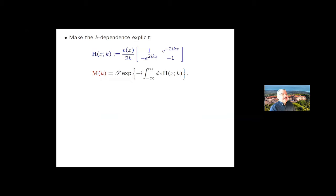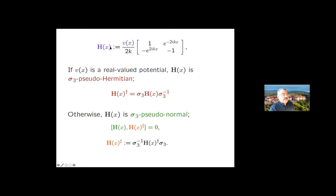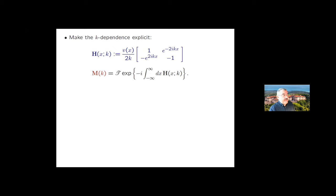Let me make the k-dependence of all these quantities explicit. Everything depends on k — k appears in the definition of H, and obviously the reflection and transmission coefficients, the evolution operator, and the transfer matrix are all functions of k. The aim of solving a scattering problem is to determine the k-dependence of these quantities.